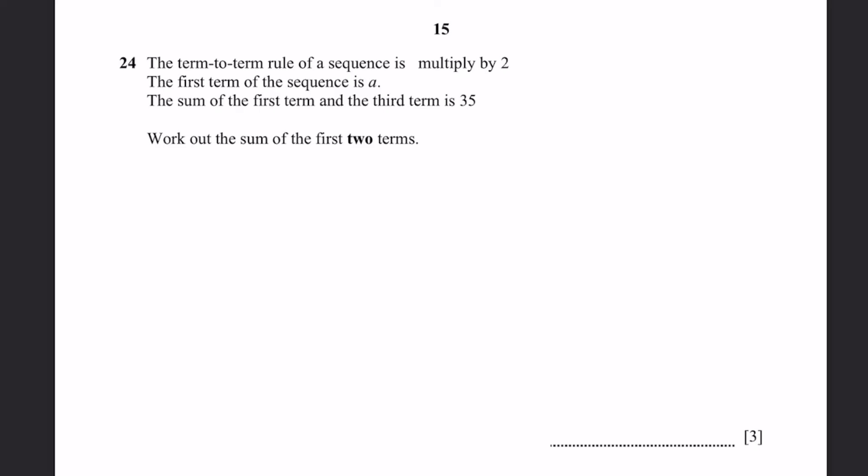Question 24. The term-to-term rule of a sequence is multiplied by 2. The first term of the sequence is 8. The sum of the first term and third term is 35. Work out the sum of the first two terms. So the first term is 8. And the second term will be 2a multiplying by 2. Third term is 4a and goes on. So the sum of these two, first and third terms, is 35. a plus 4a, which is 5a, equals 35. So a equals 7, which is the first term.